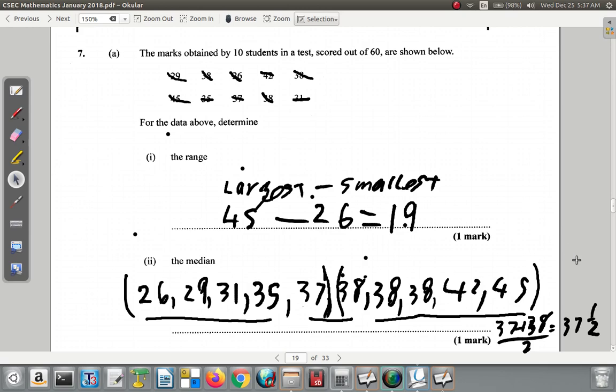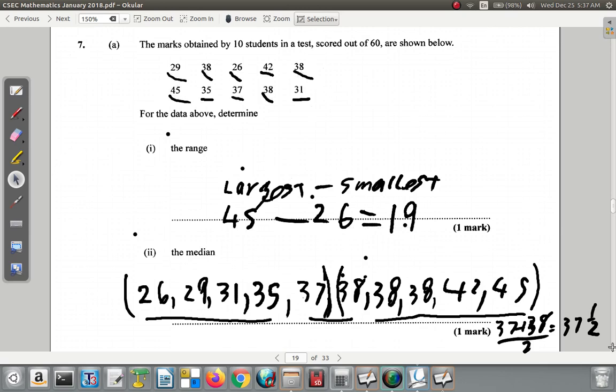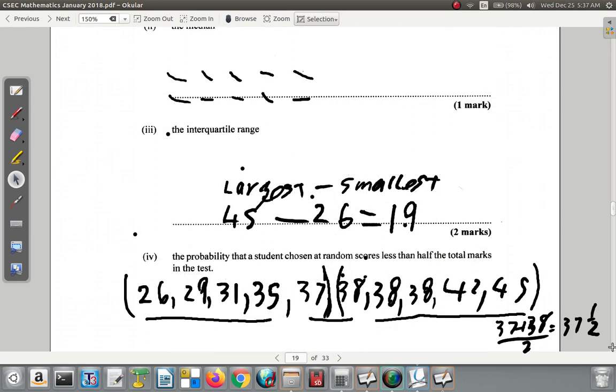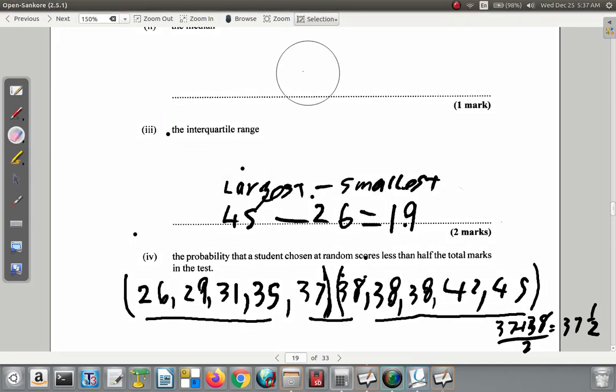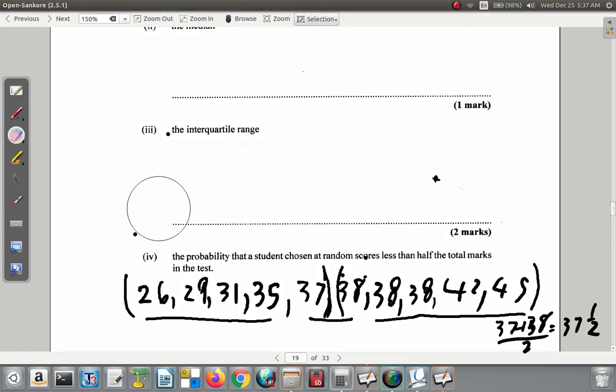After that now, let's see what happens. The interquartile range. Let's just erase these to make some space. And you want what they call the interquartile range. So you basically have the two sets of numbers, the bottom half and the top half.